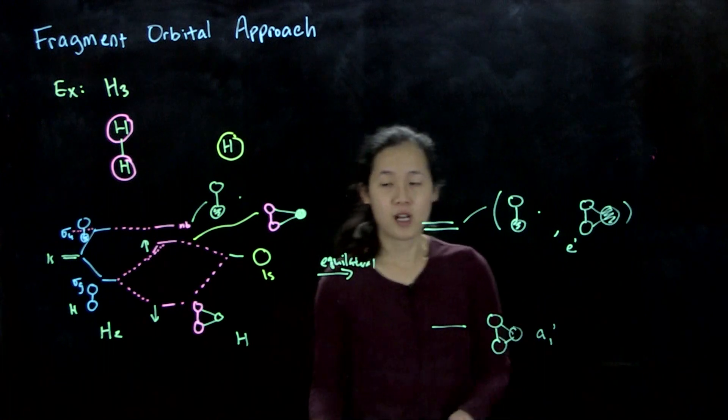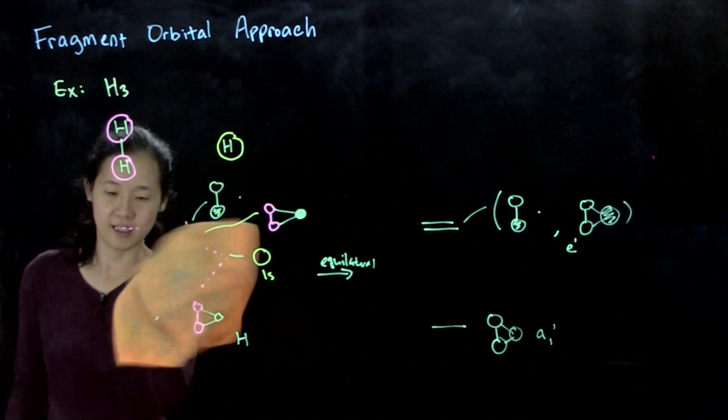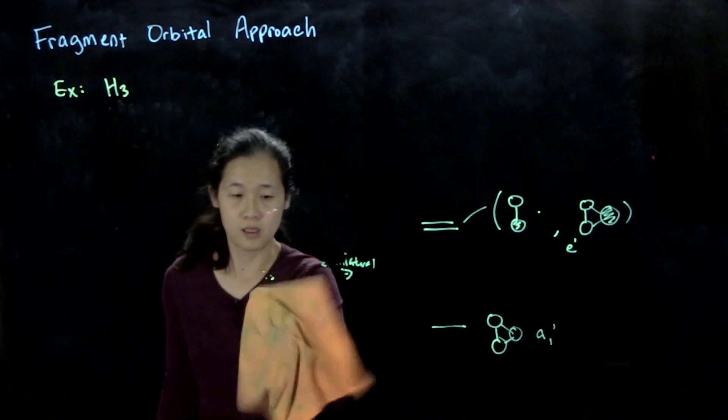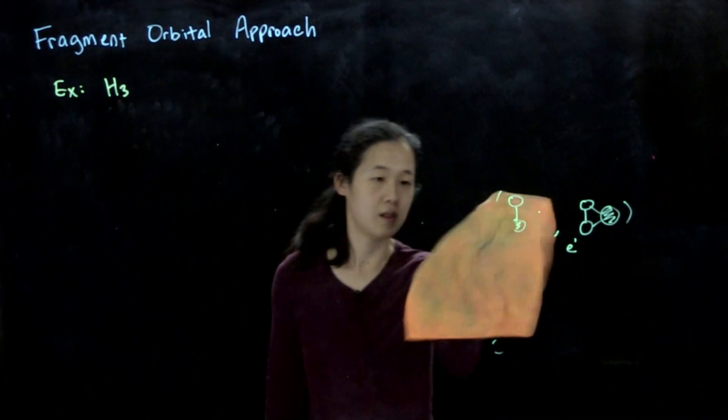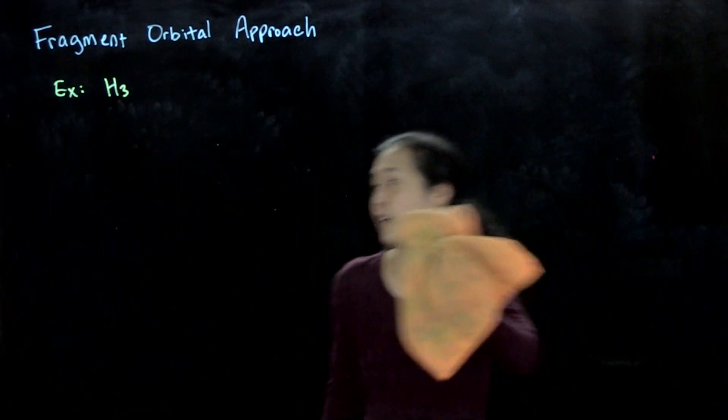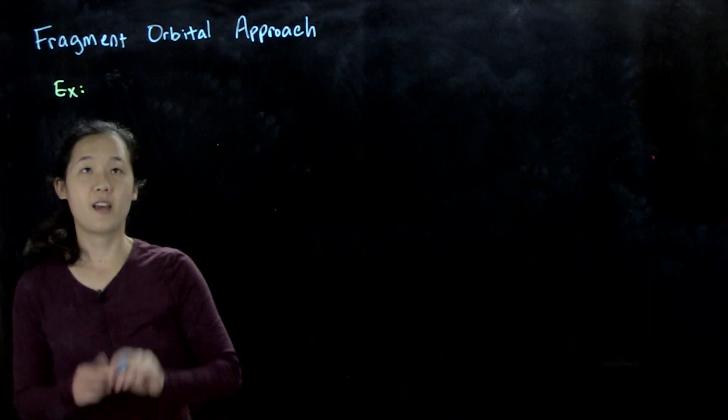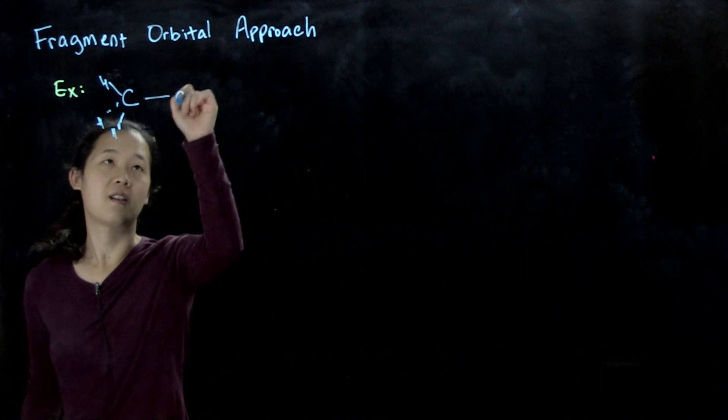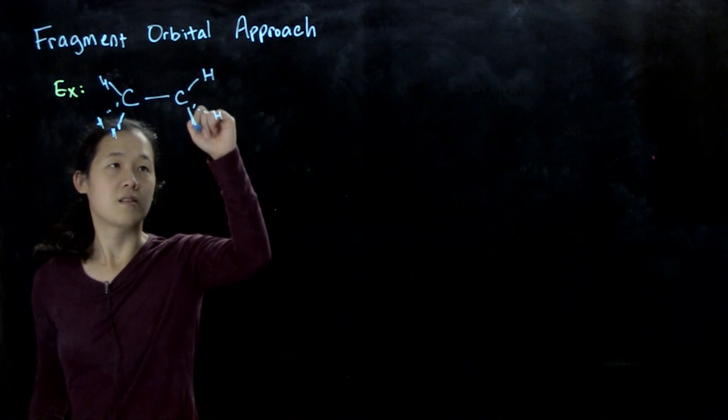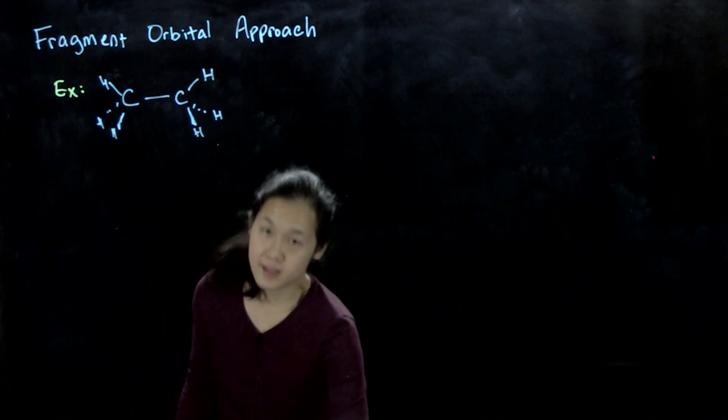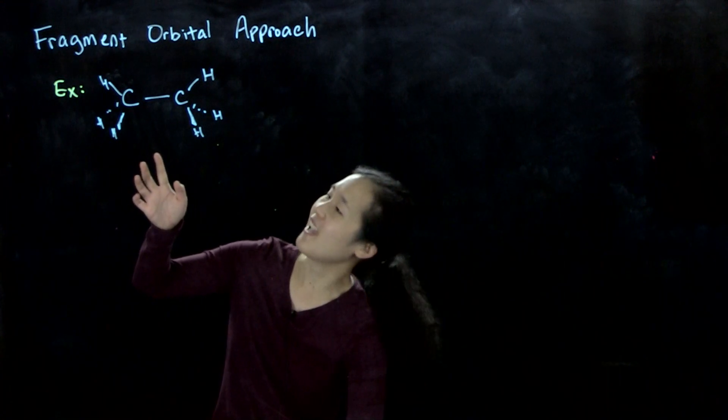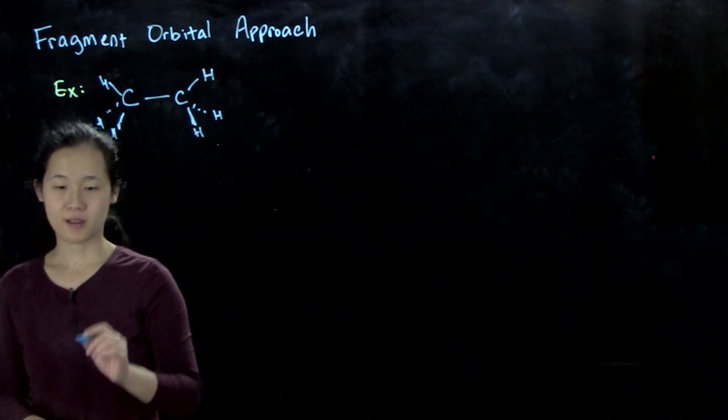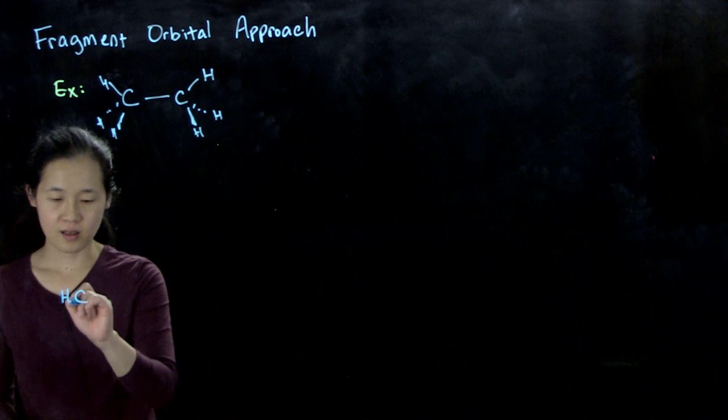Let me quickly erase. Our second example is ethane. Ethane looks like so. Let's just do the eclipsed configuration. Rather than doing this as eight different atoms altogether, what we could do is split it up into two methyl fragments. Let's think about what the methyl fragment looks like. Here's our CH3, CH3 dot.